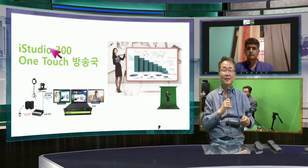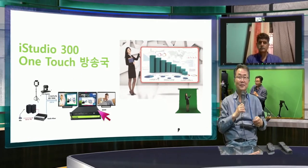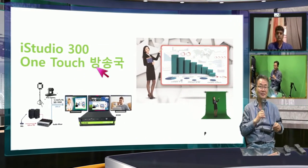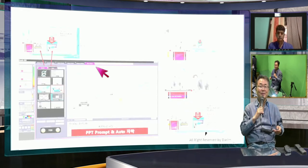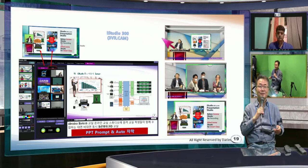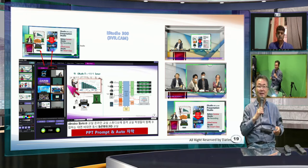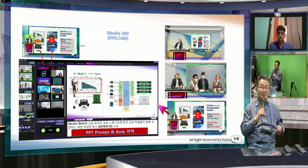Another level — a more expensive one at about $12,000 — is the 300 unit system. It has a little more complicated function, more powerful tools. You have more screens — about four scenes you can use, while the iStudio 200 has two virtual scenes. Similar function but much more capability: automatic titling, switching, many functions in the 300.